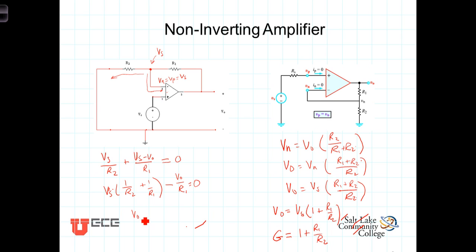We get then that V sub S times R1, times 1 over R2, plus 1 over R1, or distributing that through, the R1 over the R1 gives you the 1, the R1 over the R2 gives you the other term, and we get V out is equal to V sub S times 1 plus R1 over R2.